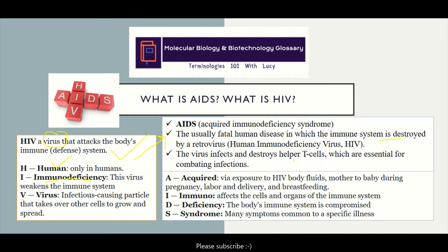The virus will infect and destroy helper T cells, which are essential for combating disease. AIDS stands for: Acquired — because it is through exposure to HIV, body fluids, mother-to-baby during pregnancy, labor and delivery, and breastfeeding. Immuno — because it affects the immune system. Deficiency — because the immune system becomes compromised. And Syndrome — because at this stage, there are many symptoms of various diseases.